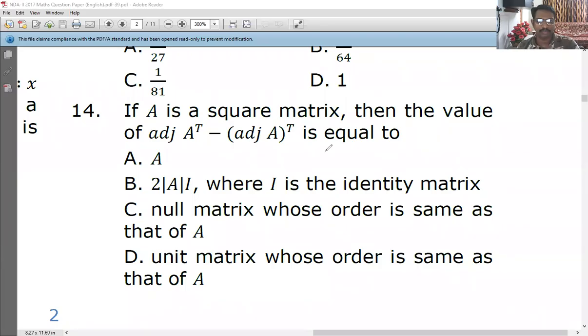Let us go for a problem on matrix. What does this problem say? A is a square matrix, then the value of adjoin of A transpose minus adjoin A the whole transpose is equal to, these are the options for you.